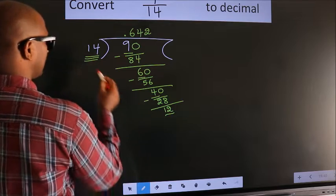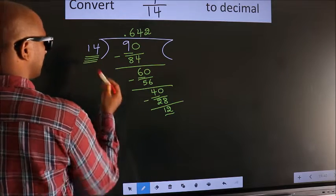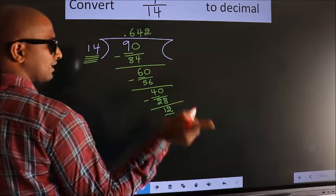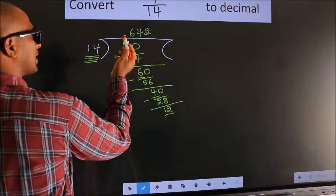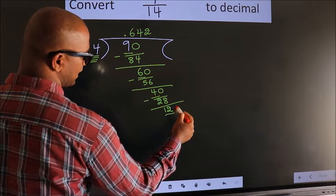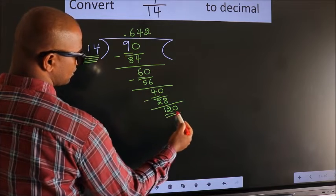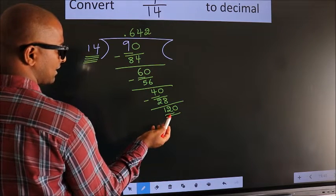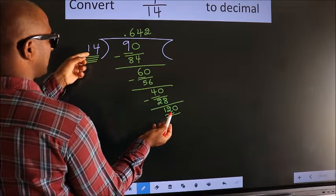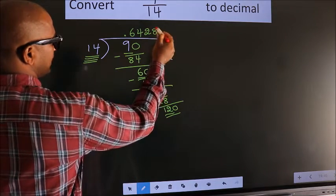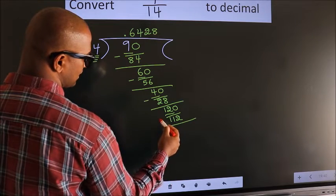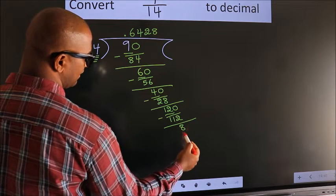Here we have 12 and here 14. 12 is smaller than 14, and we already have the decimal, so we can directly take 0. So we have 120. A number close to 120 in the 14 table is 14 × 8 = 112. Now we subtract. We get 8.